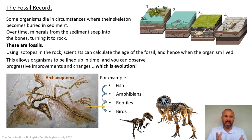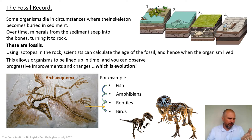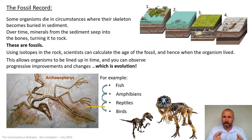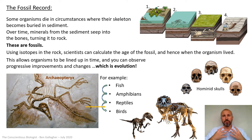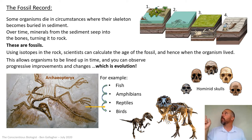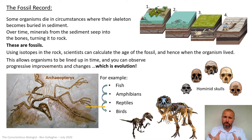However, the problem with the fossil record is that not all organisms form fossils when they die, so there are massive gaps. You might have a fossil here and one three million years later and have to guess that one evolved into the other. Without all the in-between steps, it's very hard to use the fossil record as definite evidence. More recently, we can look at different hominid skulls going back through our ancestry — you can date the bones, line them up, and see human development. That's really what the fossil record is about.